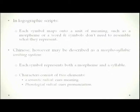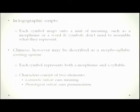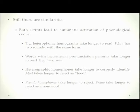Chinese has been described as a morphosyllabic writing system. Each symbol represents both a morpheme — a part of the word — and a syllable, a phonological unit. Characters consist of at least two elements: a semantic radical that tells you something about meaning, and a phonological radical that tells you about pronunciation. Because of these morphemic and syllabic aspects, Chinese is referred to as a morphosyllabic script.